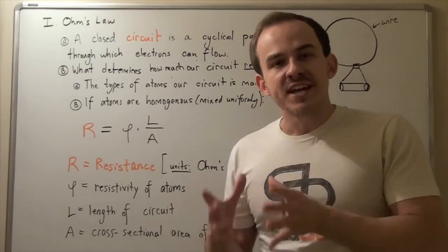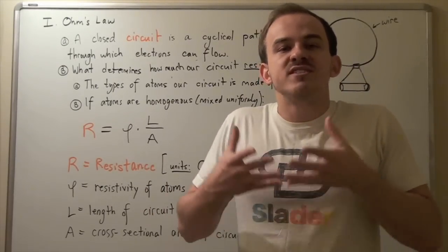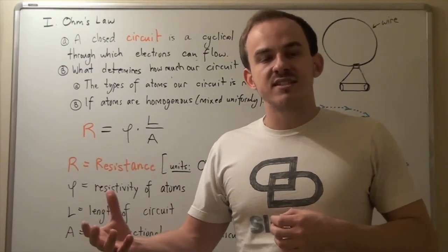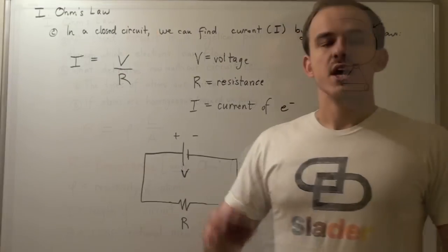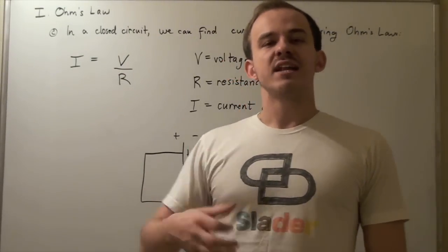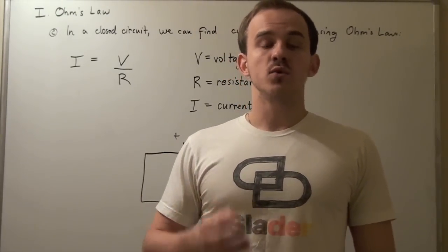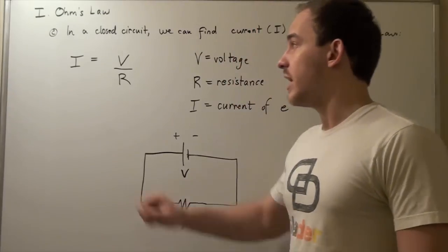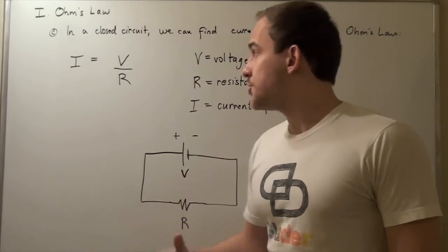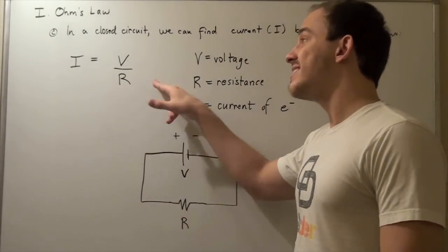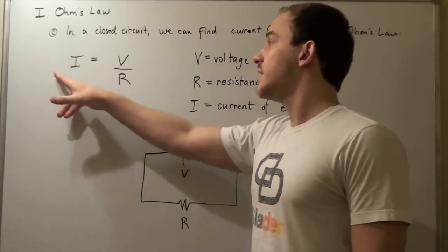Now let's look at the relationship between resistance and electron flow. This relationship is known as Ohm's Law — a simple formula that gives us more intuition about the way electrons move in any closed circuit. It's given by: I, or current, is equal to voltage V, or electric potential, divided by resistance R of our closed circuit. If we know our V and R, we know our current.